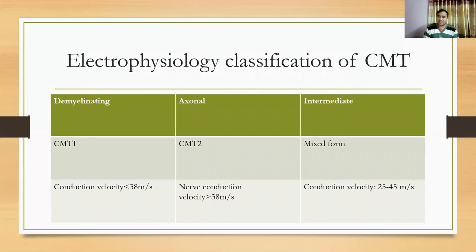Electrophysiologically, we can classify CMT into three types: the demyelinating type (CMT1) where conduction velocity is less than 38 m/s, the axonal variant where conduction velocity is more than 38 m/s, and the intermediate type with conduction velocity of 25 to 45 m/s.